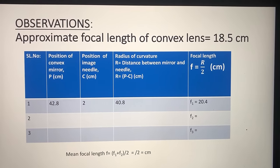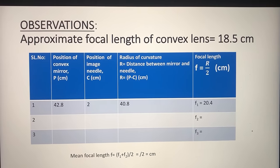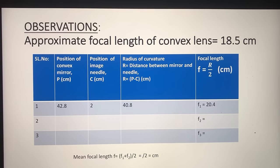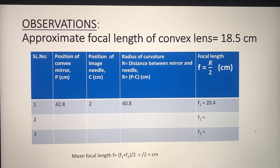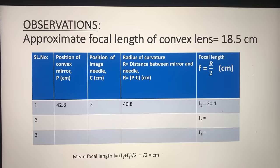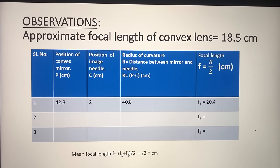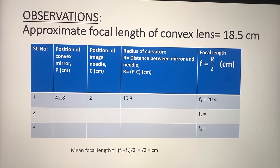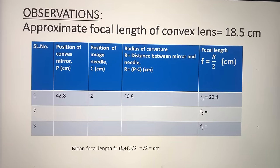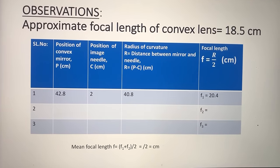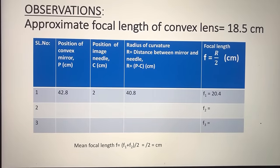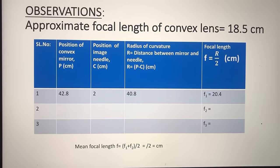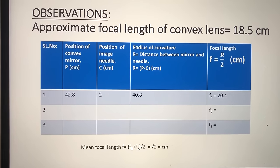Approximate focal length of convex lens = 18.5 cm. Position of convex mirror P = 42.8 cm. Position of the image needle C = 2 cm. Radius of curvature R = P − C = 42.8 − 2 = 40.8 cm. Focal length F = R/2 = 40.8/2 = 20.4 cm. So F₁ = 20.4 cm.